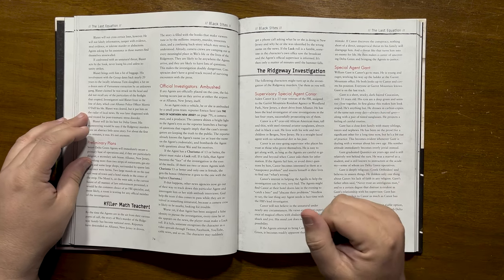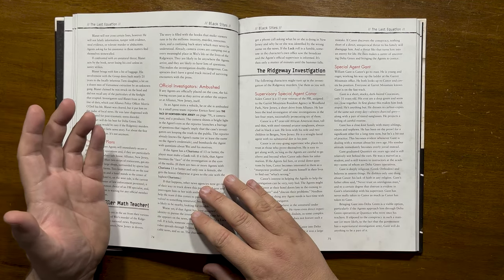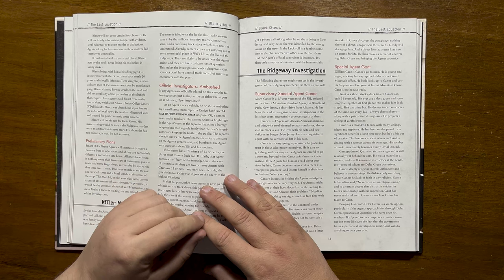If the agents are officially placed on the case, they will be ambushed by a local news star Enrico Sarve who attempts to make one of them the face of the investigation, which could cause problems for those that are trying to act incognito.